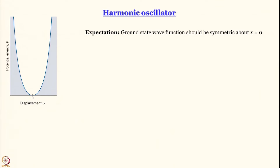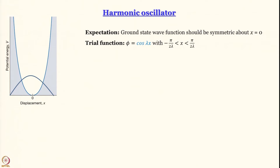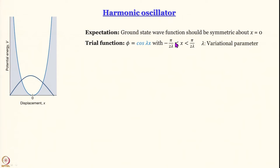Like the hydrogen atom ground state problem, you can start with a Gaussian function — I would encourage you to do it and see what kind of answer you get. But what we will do is choose a trigonometric function — a cosine function — because the value of cosine x at x = 0 is 1, and then as you go towards plus or minus x values, it falls. So we take this symmetric cosine function as our initial guess function and set the limits to be x between -π/2λ and +π/2λ, where lambda is a variational parameter.